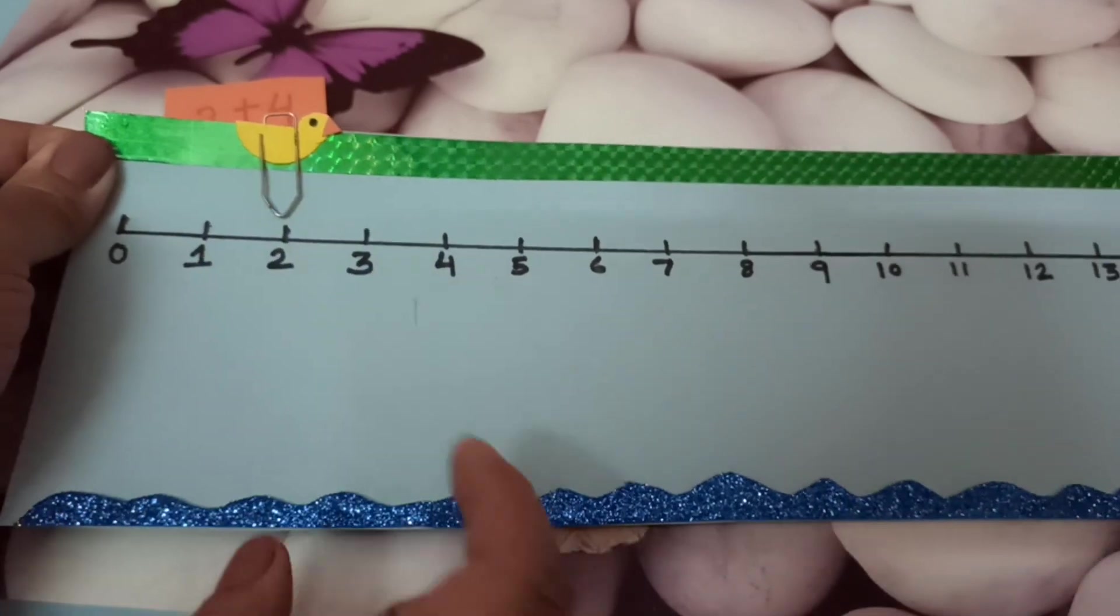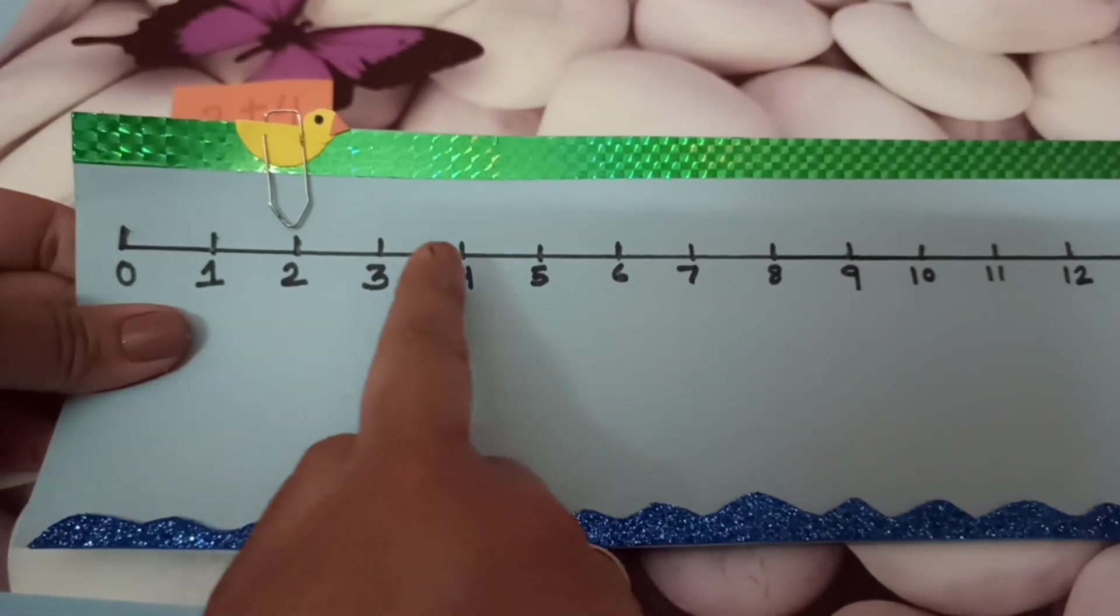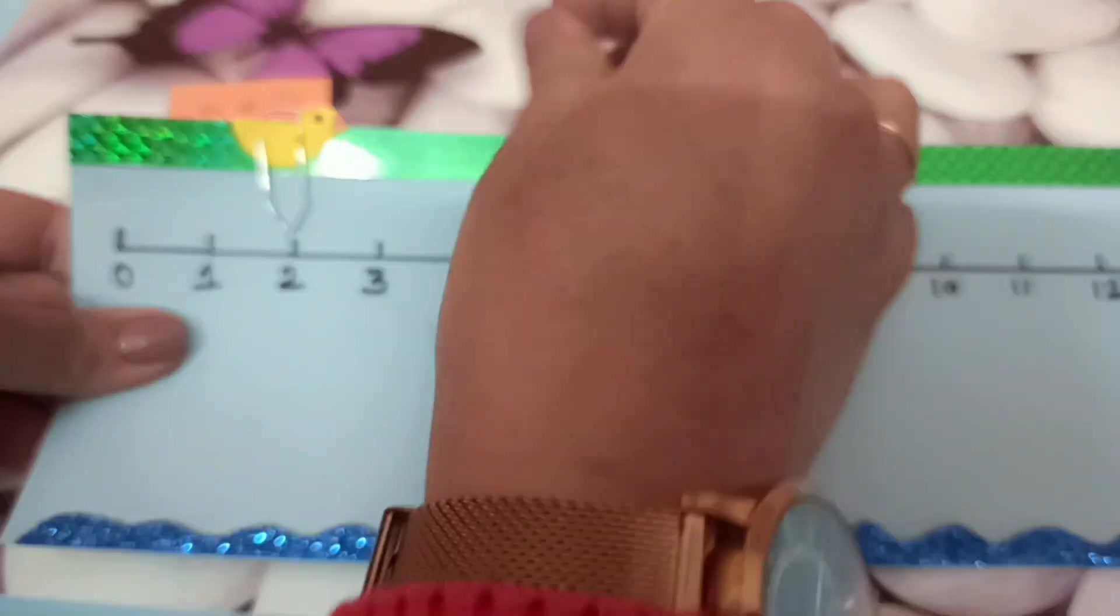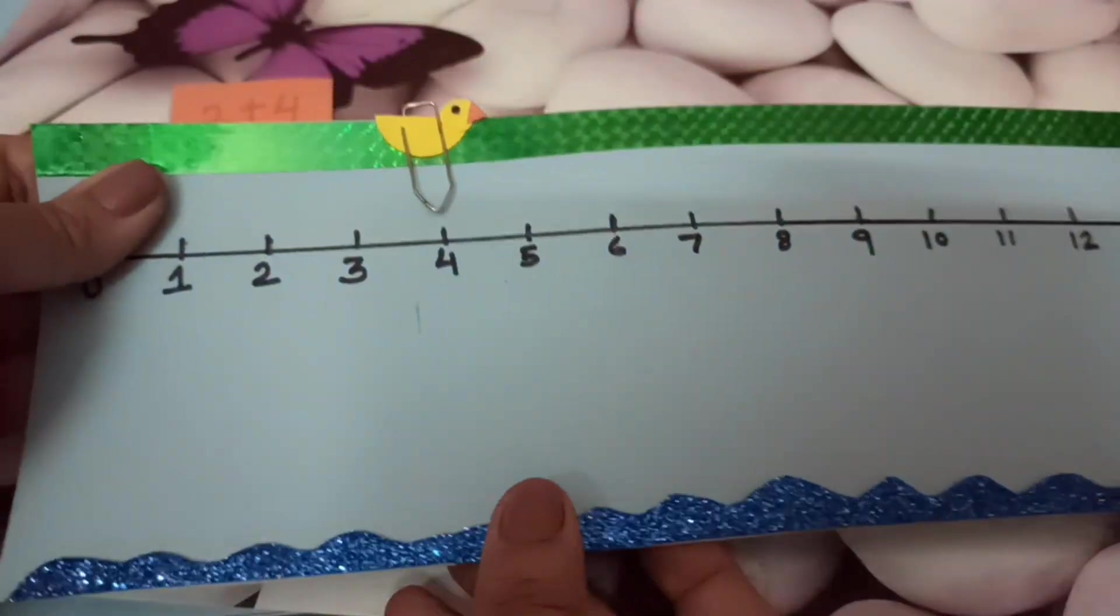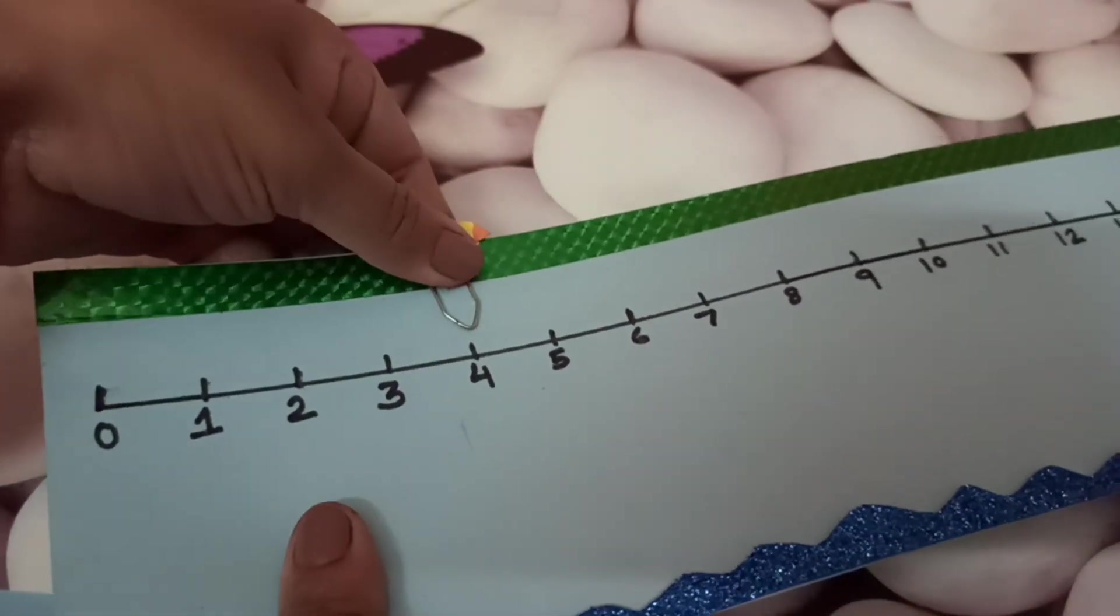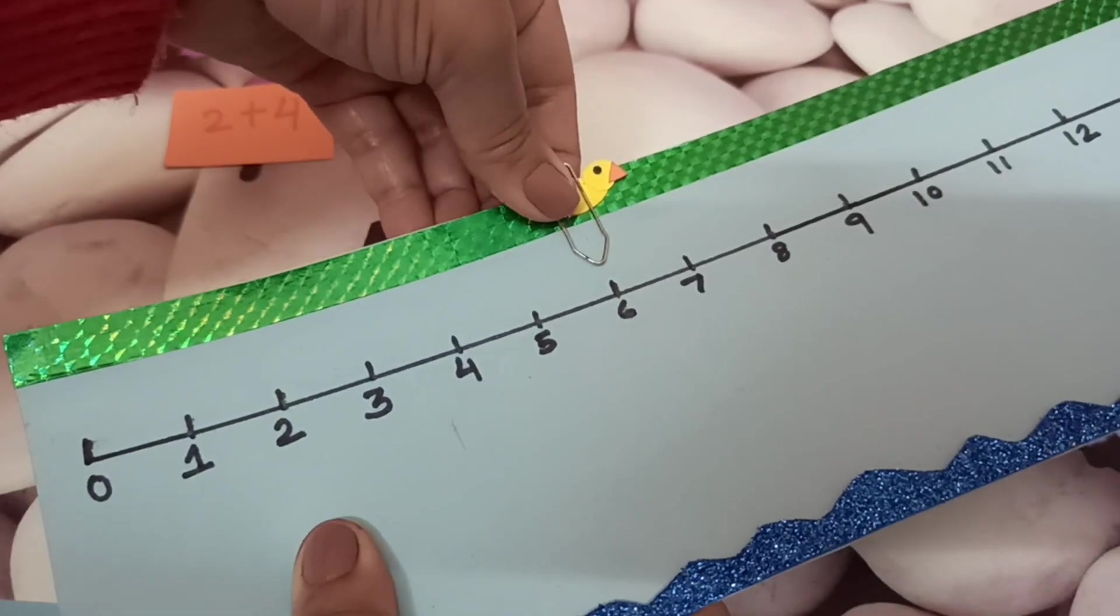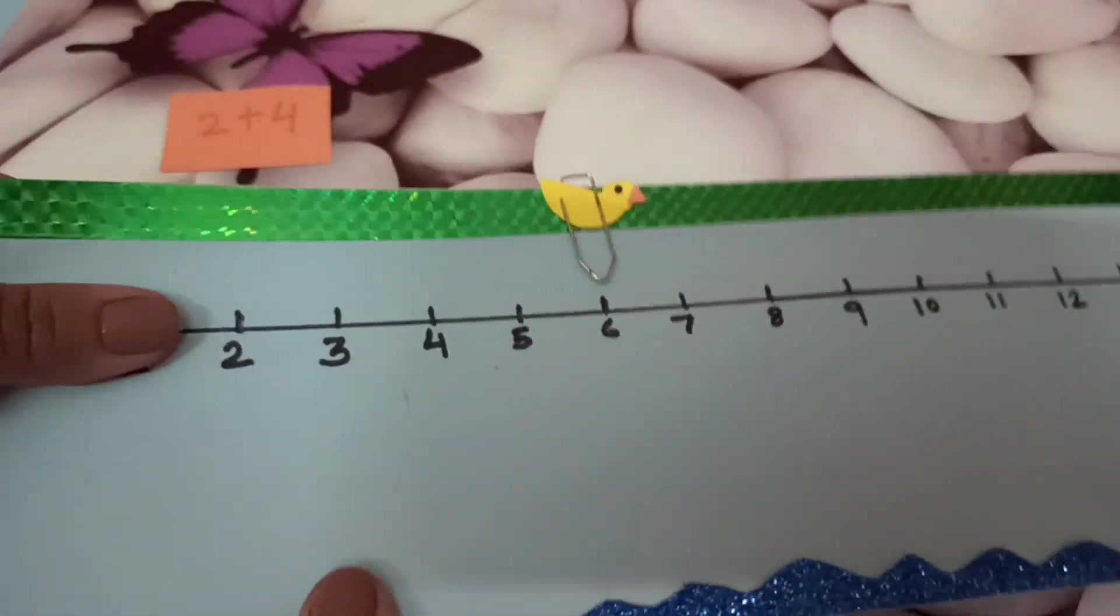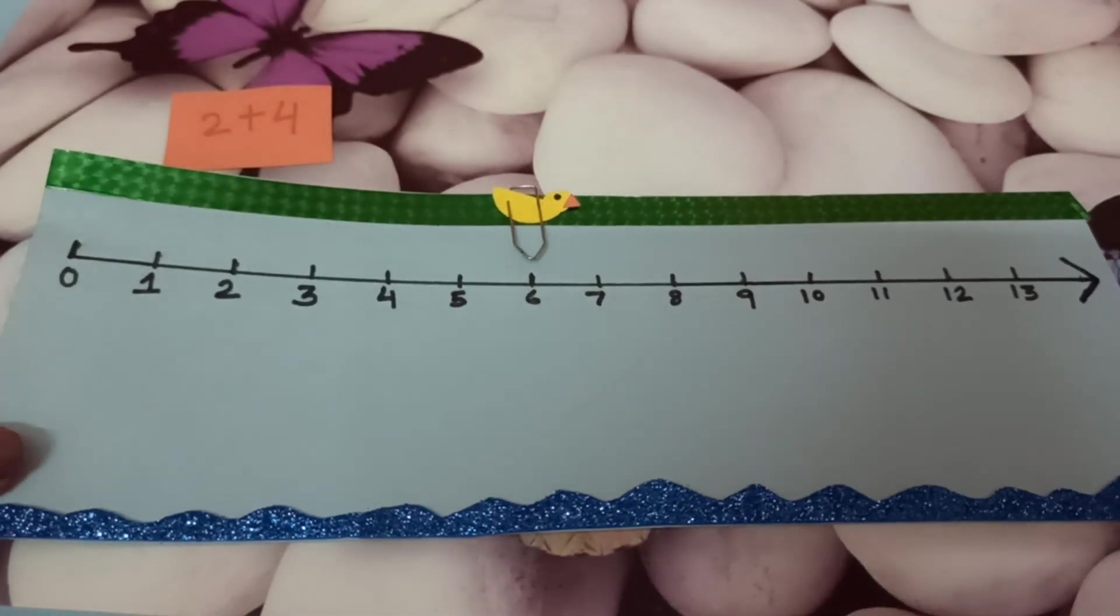Our duck is on number 2. Now the duck will take 4 more steps but in forward direction. I have already uploaded addition on number line on my channel. The link is given in the description box as well as in the i button. Just slide the pin carefully. Now our duck is on number 6 and this is the answer.